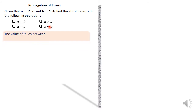The value of A lies between 2.65 and 2.75. The number 2.7 is written correct to the nearest one decimal place. That means the absolute error would be 0.1 divided by 2, which gives 0.05. Adding 0.05 to 2.7 gives 2.75, the upper limit, and subtracting 0.05 from 2.7 gives 2.65, the lower limit.